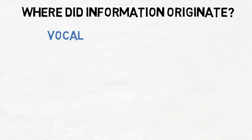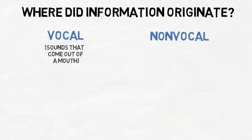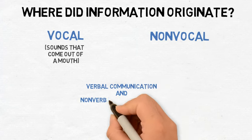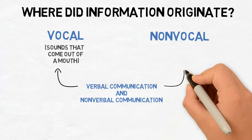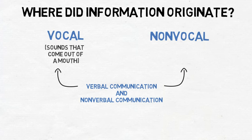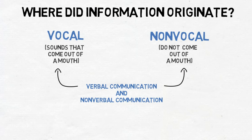A further way to categorize communication beyond verbal and non-verbal categories is by its origin — where did the information sent originate? Beyond the categories of verbal and non-verbal, communication can also be categorized as either vocal or non-vocal. Vocal communication refers to sounds that come out of a mouth like words, grunts and sighs, and how the sounds are presented including speed, loudness level, and more. As both verbal and non-verbal communication can be vocal, so too can they be non-vocal. Only the words that come out of a mouth are classified as verbal.